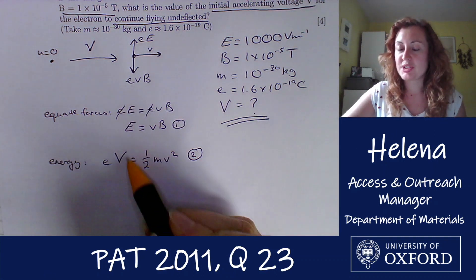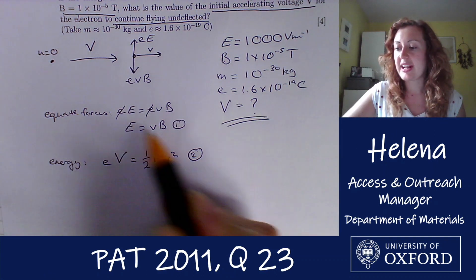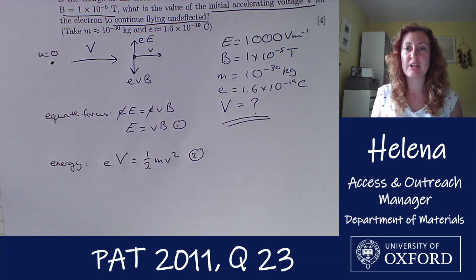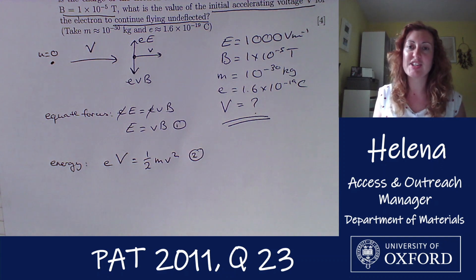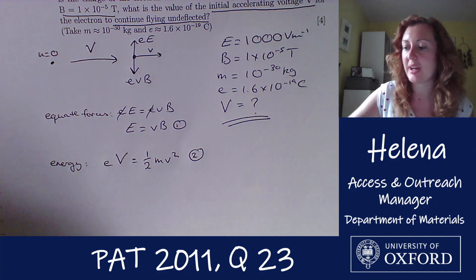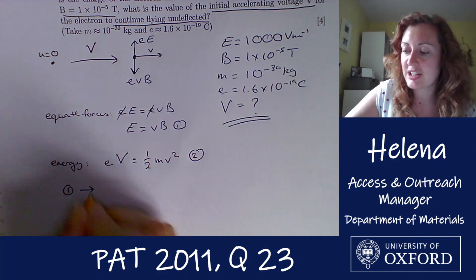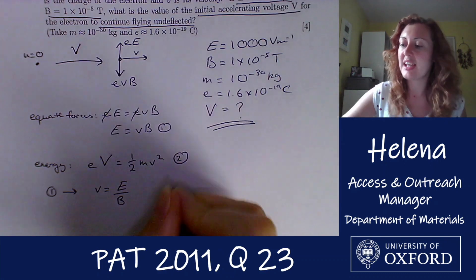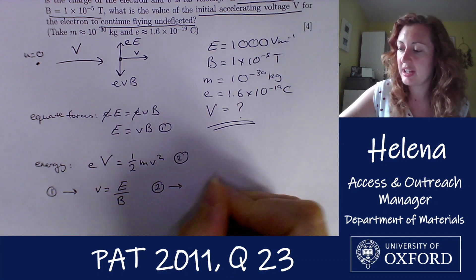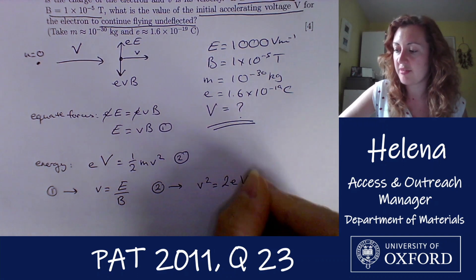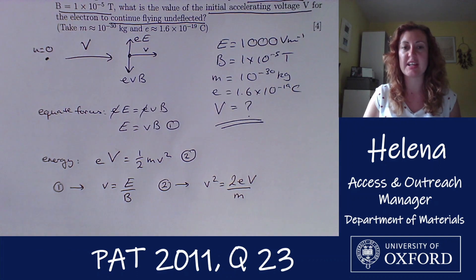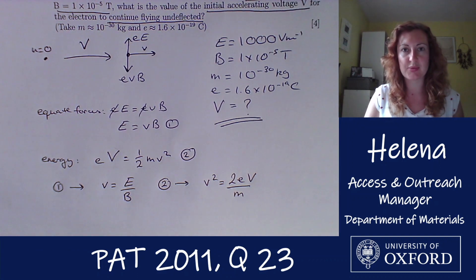So here we want to find this uppercase V, but I can see that in these equations we have its velocity, its lowercase v, but we don't really want that to be there. So what I'm going to do is rearrange equations one and two to make the velocity the subject and then we can get rid of that from the equations. So if I rearrange equation one, I have that v equals E over B. And if I rearrange equation two, I have v² equals 2eV over m. I'm going to leave this in terms of v² because I think that's going to be easier to deal with than dealing with a big square root sign.